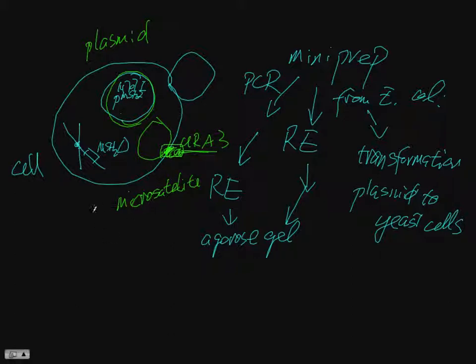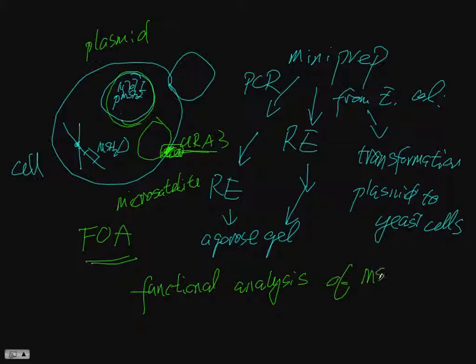The way we select for URA3 is using a chemical called FOA. If you watch the previous year's student presentations, FOA is really the key to selecting for the function of MSH2. So FOA and URA3 provide us with a functional analysis of MSH2 mutations.